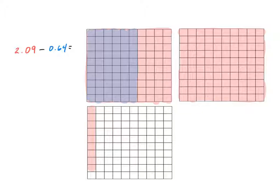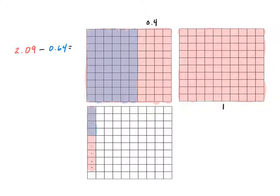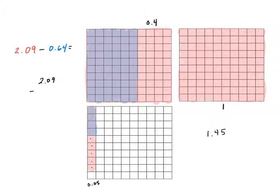I have four more hundredths to take away. I'm going to take them from the bottom since there's not a complete tenth modeled there. So I'll take away one, two, three, four hundredths. Now let's look at the answer — the red part that is left. I see one complete hole, four tenths right here, and then five hundredths. So altogether the red part is one hole, four tenths, and five hundredths — one and forty-five hundredths.